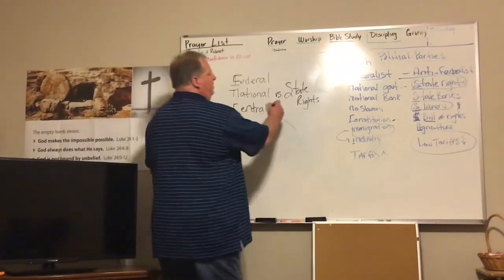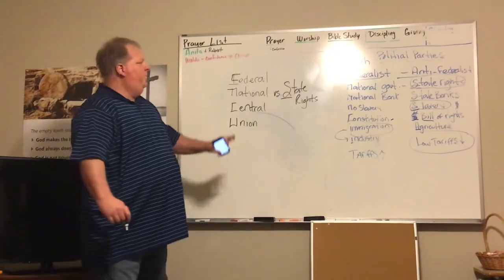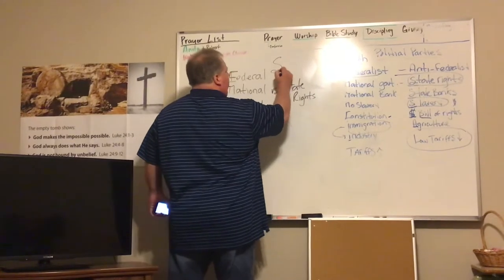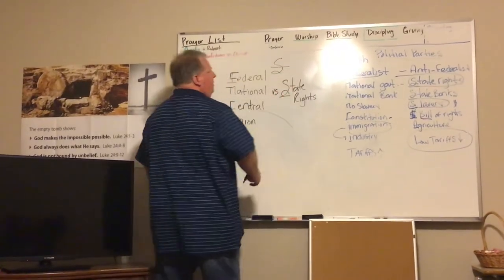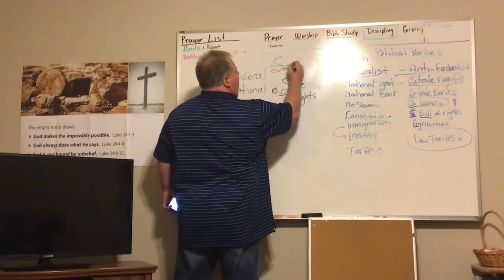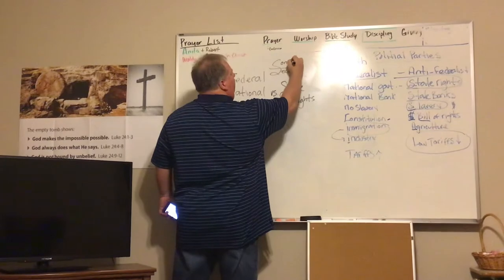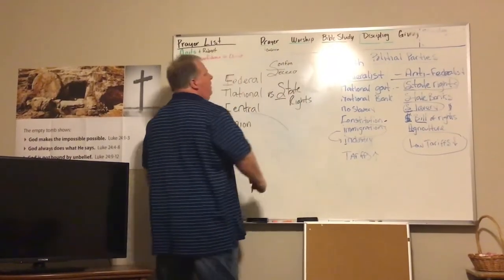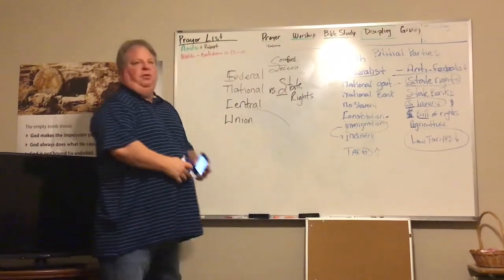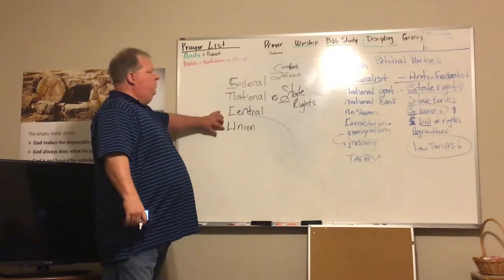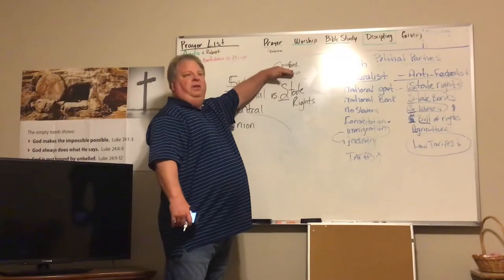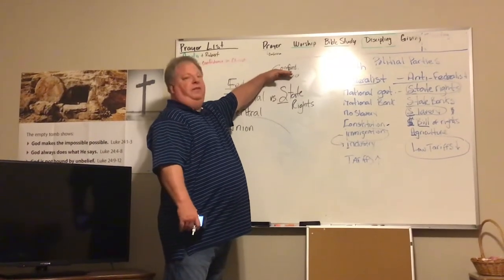Now the South — they just believe in state rights. So for the South, they could use the word South, they could use state rights, or if you cut the F and the S in half — meaning they're going to leave — that really just means secede. That leaves a C, so the South can also be called the Confederacy. So those are the words that will be used. If I talk about the North: Federal, National, Central, Union. If I talk about the South: state rights, the Confederacy, or the Confederate States of America.